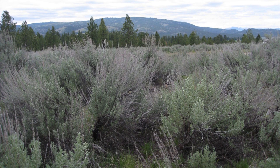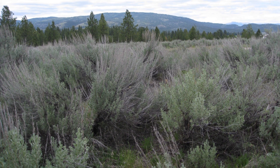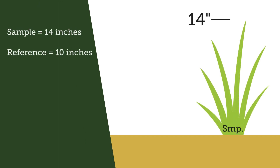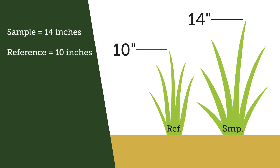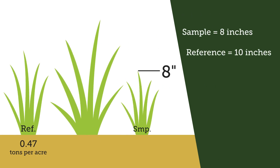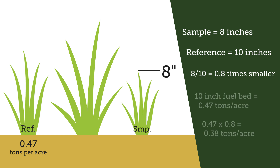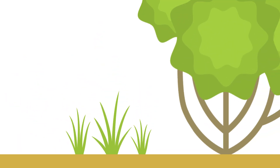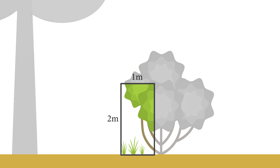What if your fuel bed is not the same height as the reference? Even with the same cover, there is more loading in a taller fuel bed. If the sampling unit fuel bed is 14 inches and the reference is 10 inches, the fuel bed is 1.4 times bigger — so 0.47 times 1.4 gives an estimated loading of 0.67 tons per acre. Similarly, if the fuel bed is 8 inches, it is 80% of the reference, so 0.47 times 0.8 gives 0.38 tons per acre. Remember, this measures surface fuels only — vegetation above 6 feet tall is not included.